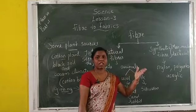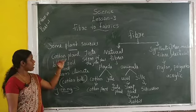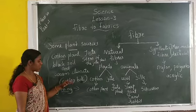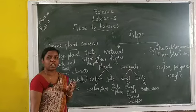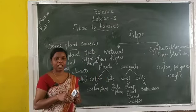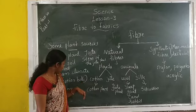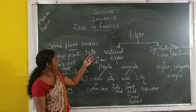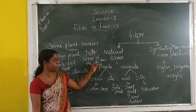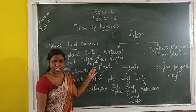Synthetic fibers will be studied in detail in 7th class. To summarize plant sources: cotton balls contain seeds which are separated by combing — this is called ginning. Jute is obtained from the stem of the jute plant, cultivated and harvested in the rainy season.